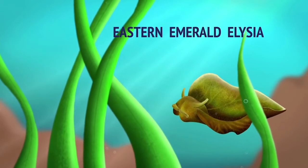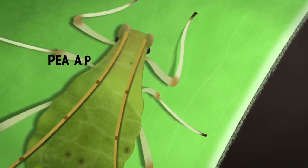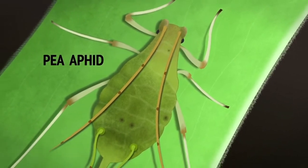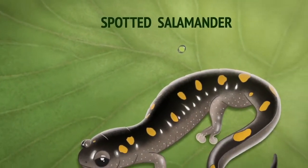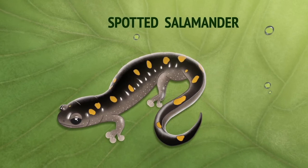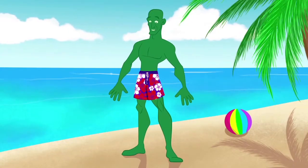Some animals have managed to figure this out by harnessing plants' special abilities. The problem is that you would have to somehow find algae and then have it live under your skin, and you'd be green all over like seaweed.